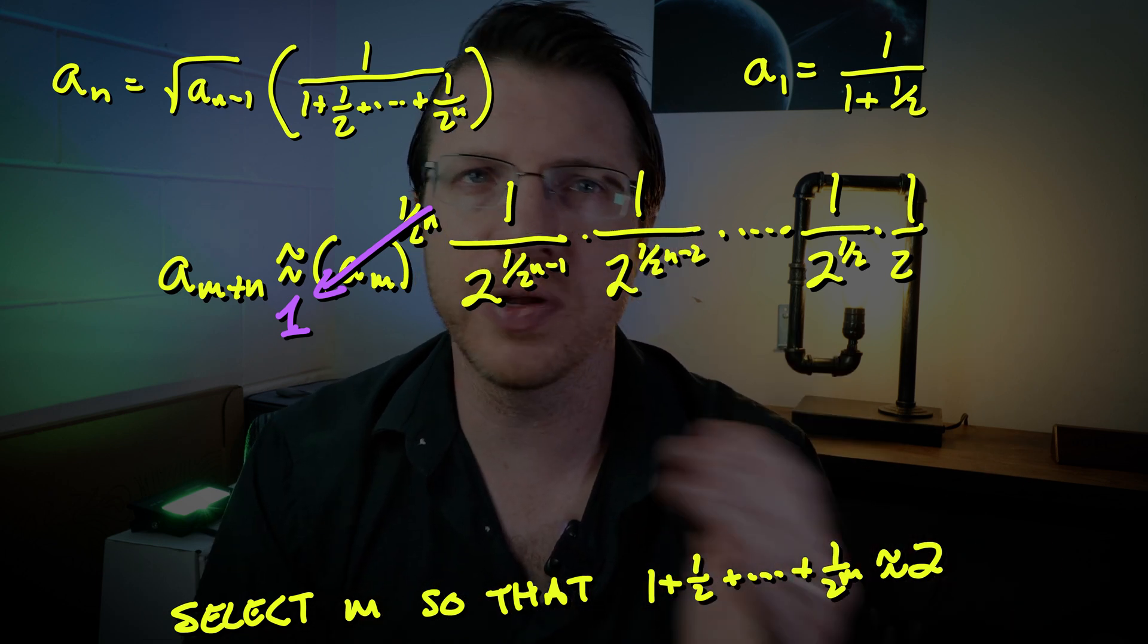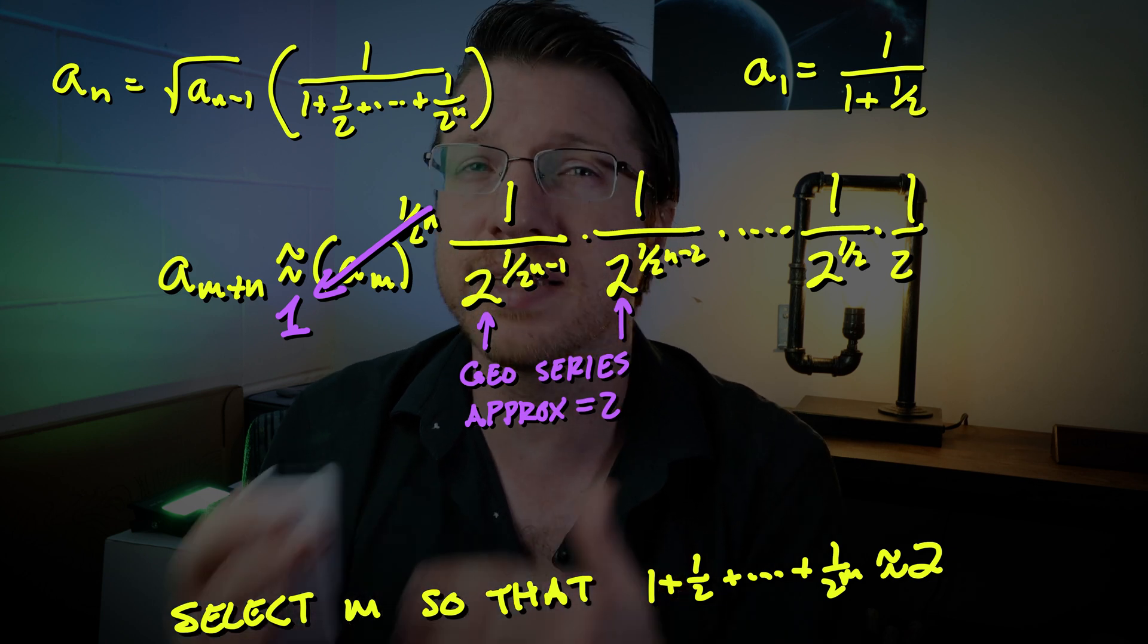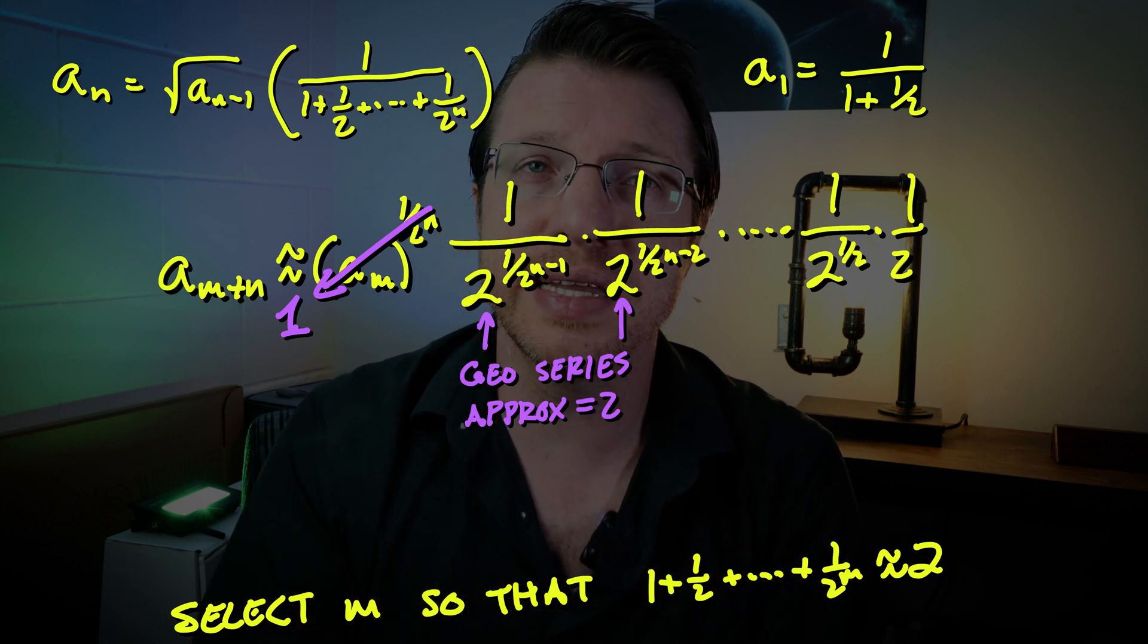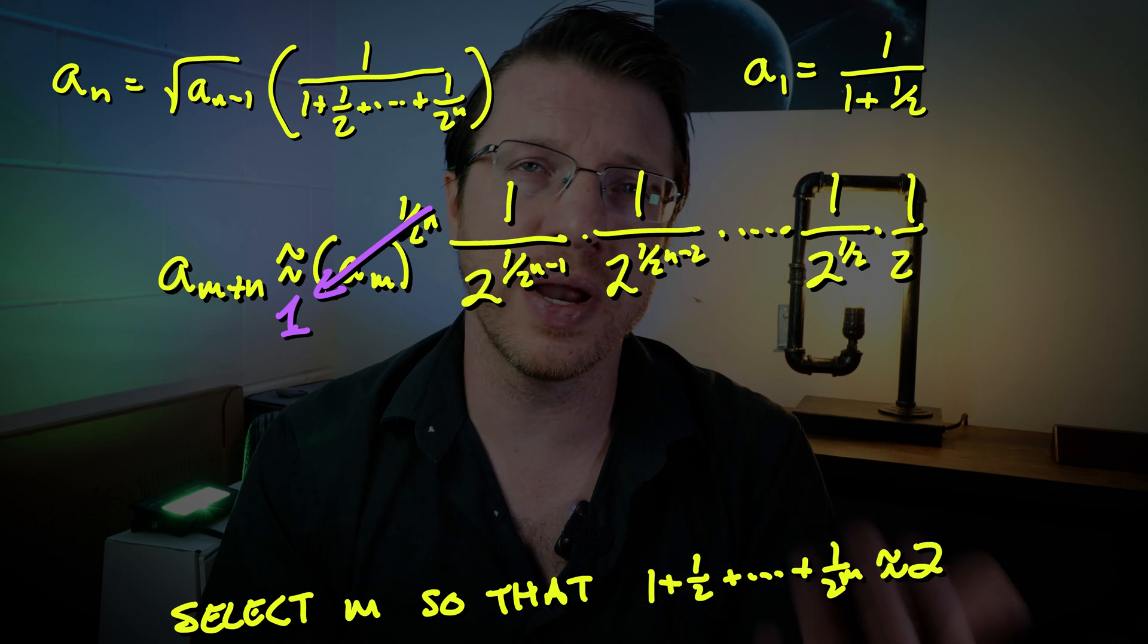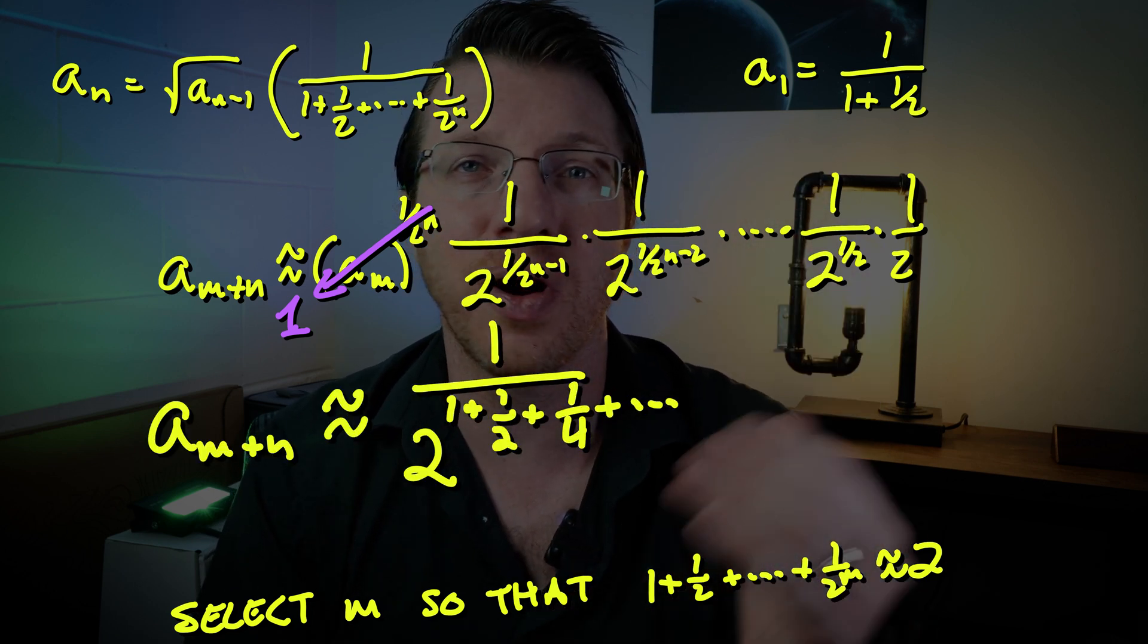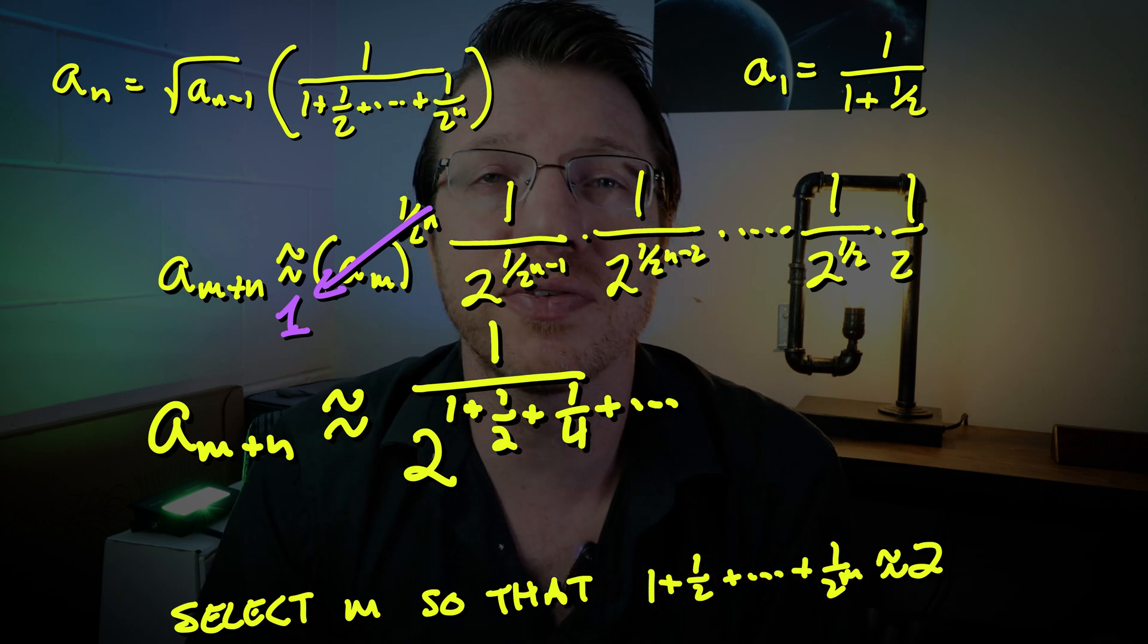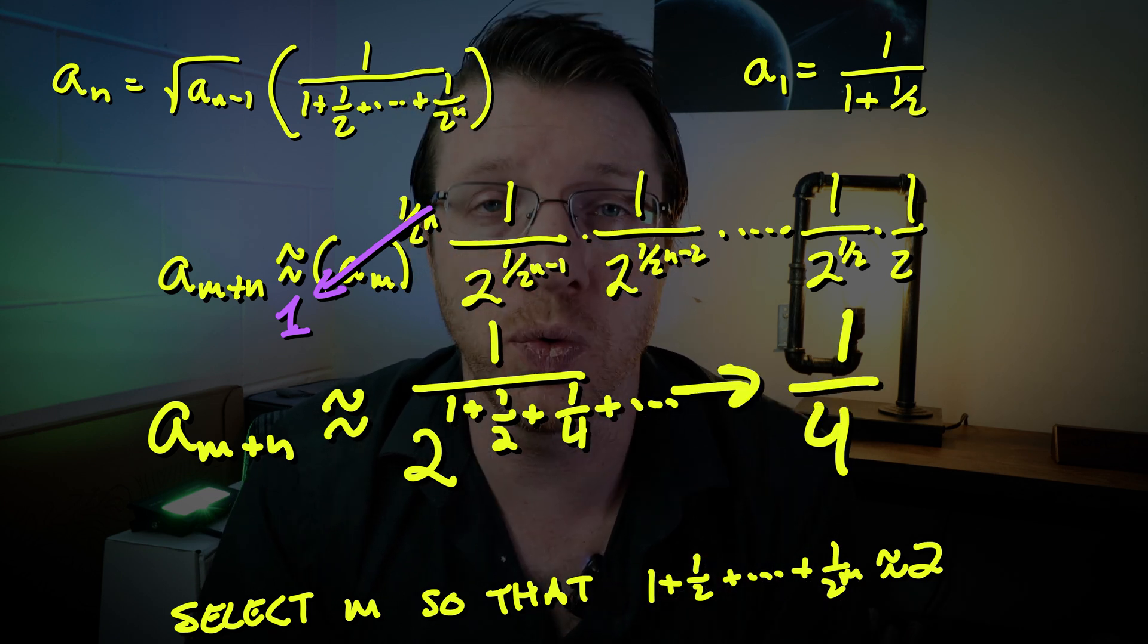Then the rest should be roughly 1/2 raised to different powers because the geometric sums should be close to 2 by the time we got to aₘ. Hence we see that this becomes about 1/2 raised to the (1 + 1/2 + 1/4 all the way up to 1/2 to the nth power) or approximately 1/2 squared which is 1 quarter.